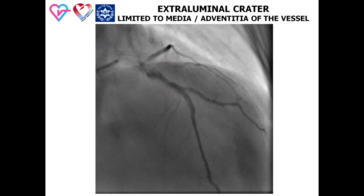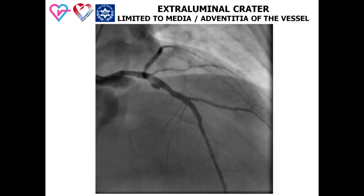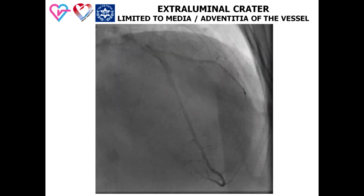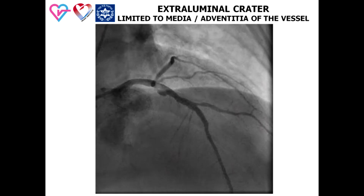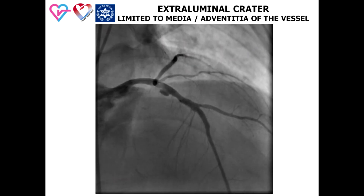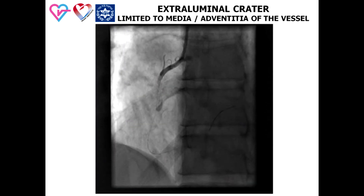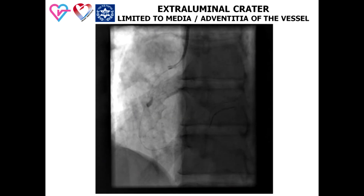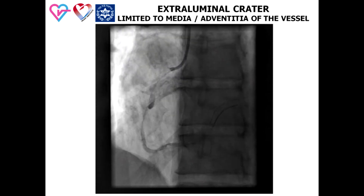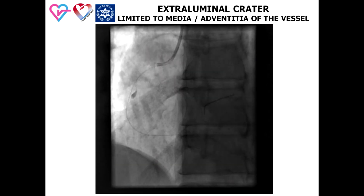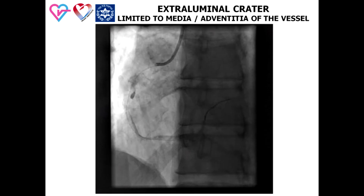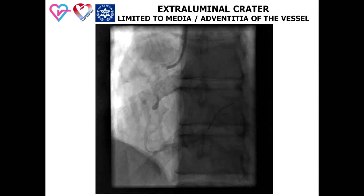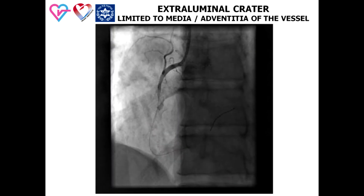In this angiogram, you can see an example of an extraluminal crater, defined as perforation limited by the adventitia of the vessel, in a patient after stent implantation to a proximal LAD segment. Another example shows wide coronary artery dissection with development of an extraluminal crater in a stenting patient after vessel pre-dilatation. During primary PCI, rupture of the internal elastic lamina of the right coronary artery can expand intravascularly as dissection or extravascularly as perforation limited by media or adventitia.